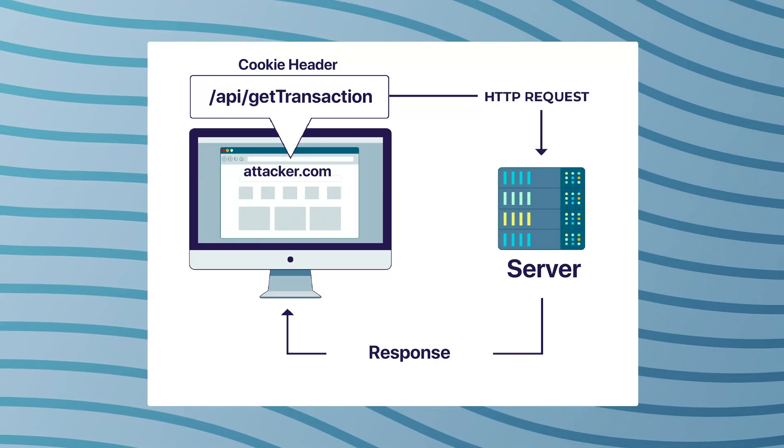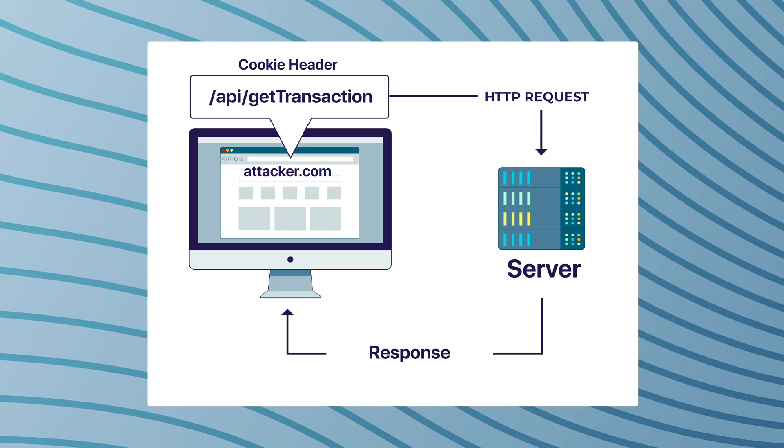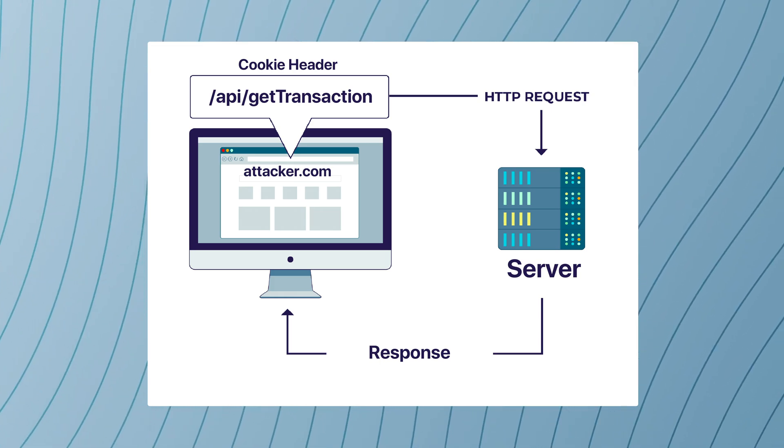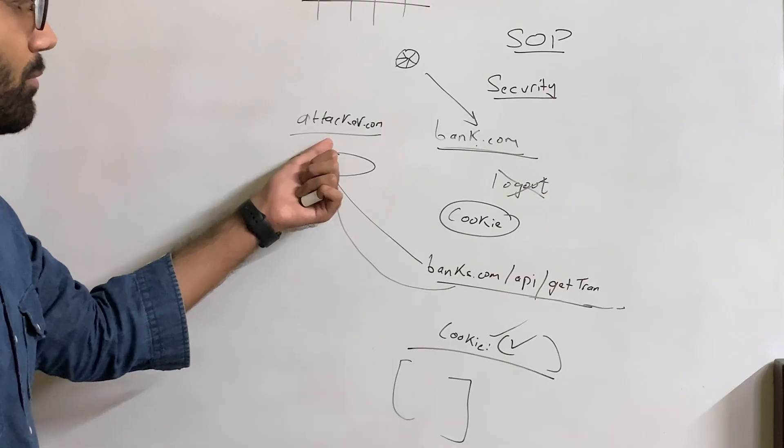If it is able to call this API, your browser knows that hey, this person is already logged into bank.com, so I'm just gonna use this cookie and it's gonna return this data to attacker.com.